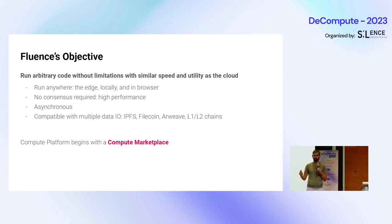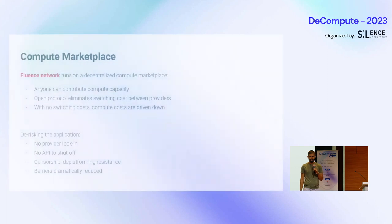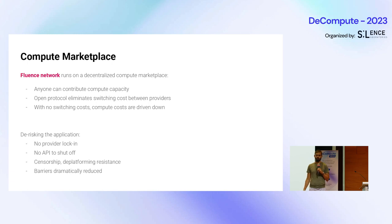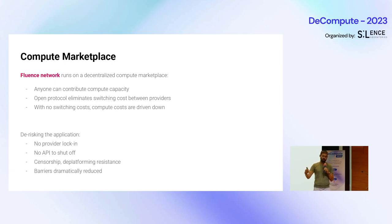A compute platform begins with the compute marketplace. Let's begin the Fluence overview with the Web3 compute marketplace. Fluence network runs on a decentralized compute marketplace so that anyone can contribute compute capacity. It's an open protocol, and the open protocol eliminates switching costs between providers. With no switching costs, there is competition and compute costs are driven down. It allows risk reduction in the application, as there is no provider lock-in, no API to shut off, no means to censor data.